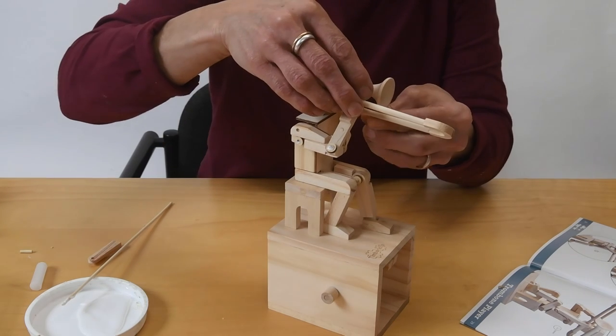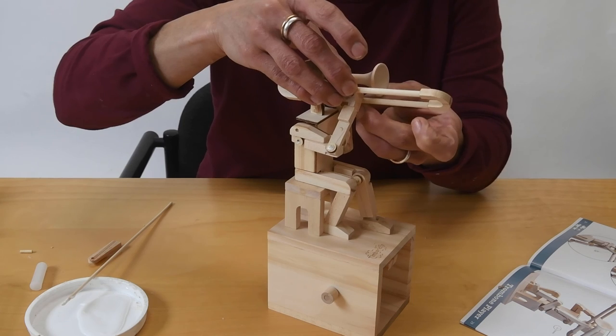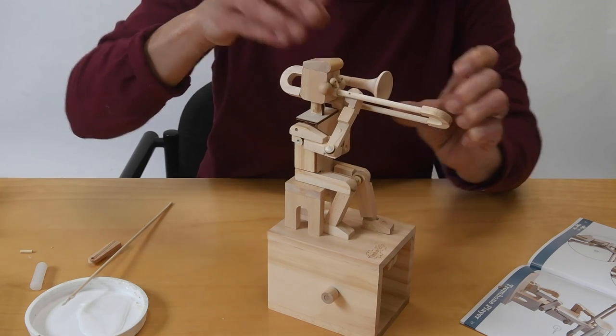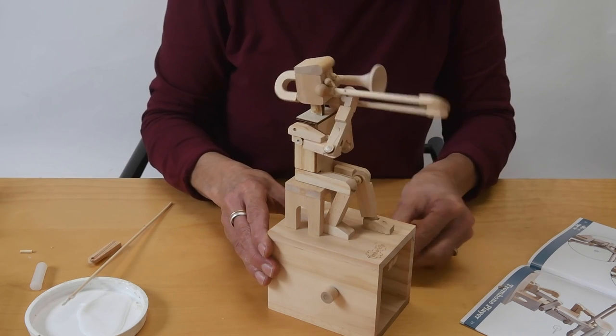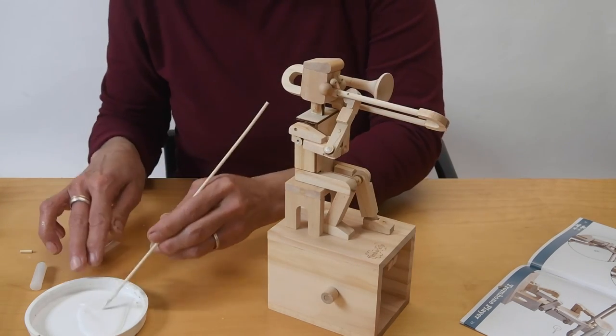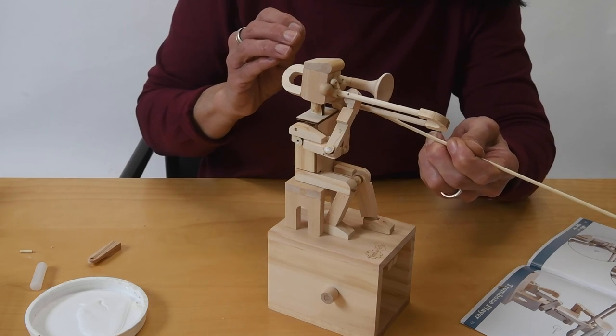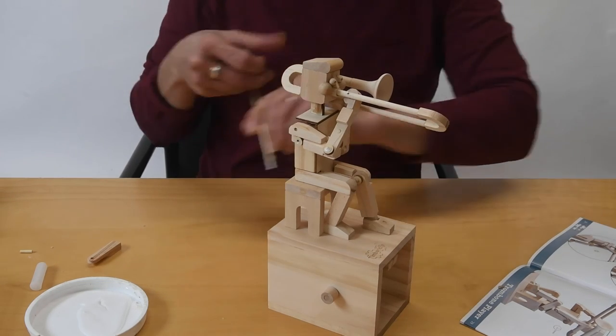And turn the handle gently and try it. And then, put a blob of glue either side of that peg, to make sure it's safe in place.